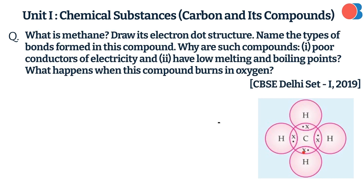What is methane? Draw its electron dot structure. Name the types of bonds formed in this compound. Why are such compounds poor conductors of electricity and have low melting and boiling points? What happens when this compound burns in oxygen?